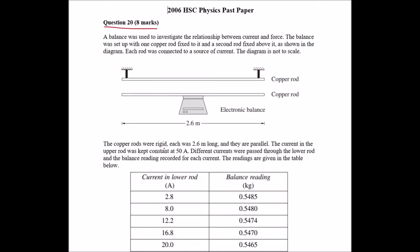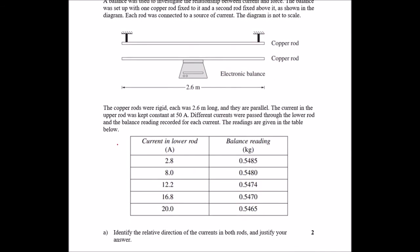The copper rods were rigid, each was 2.6 meters long and they are parallel. The current in the upper rod was kept constant at 50 amps, different currents were passed through the lower rod and the balance reading recorded for each current. The readings are given in the table below.